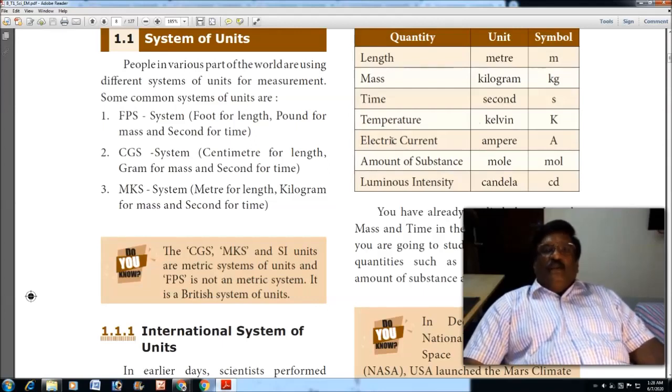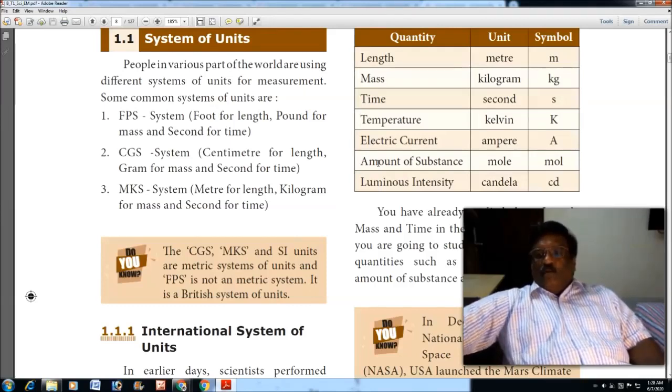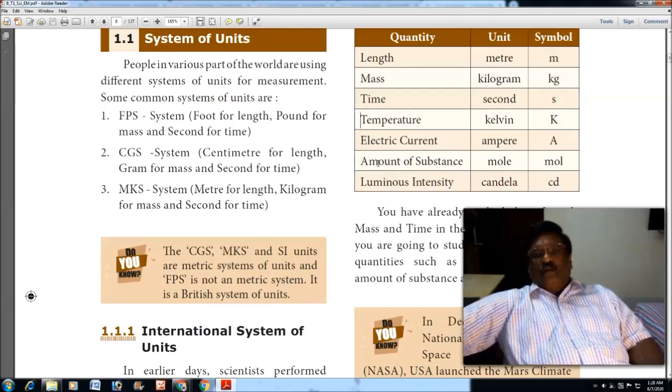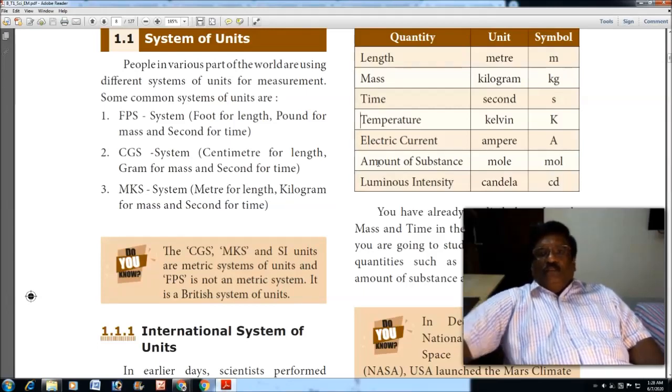Electric current: in our household we are using electricity, and the strength of current is measured in amperes. The sixth one is amount of substance, which is called mole. It is used in chemistry by chemists to measure the volume of substances. For example, one mole of hydrogen reacts with one mole of oxygen.